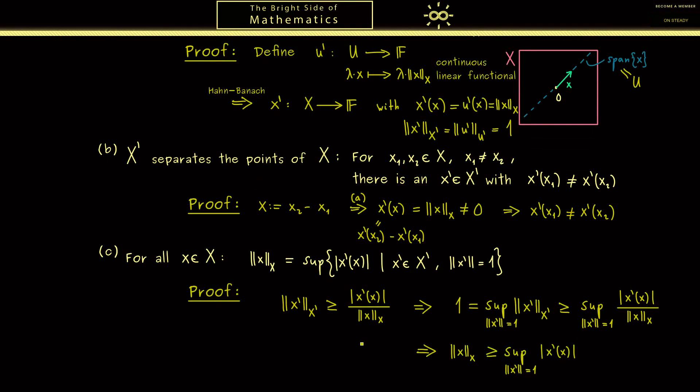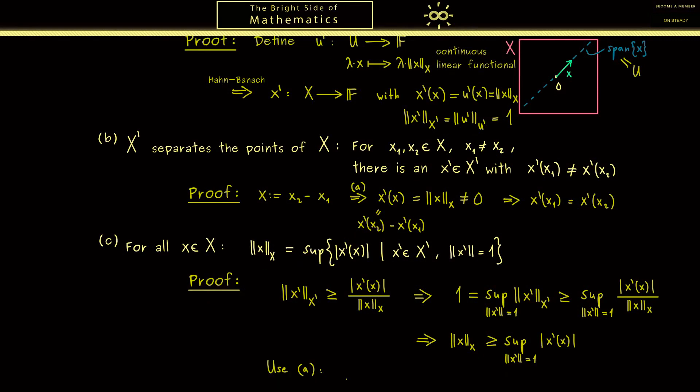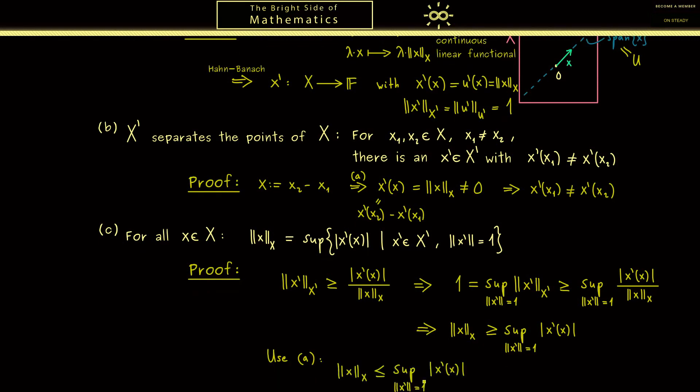Of course for the next step we can use (a) again because it tells you that there exists a linear functional such that this number is exactly the norm of x. Or in other words the norm of x is less or equal when we have the supremum on the right hand side. Please note by (a) we also know that this supremum is indeed a maximum.